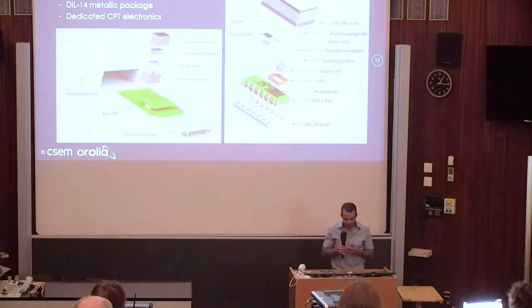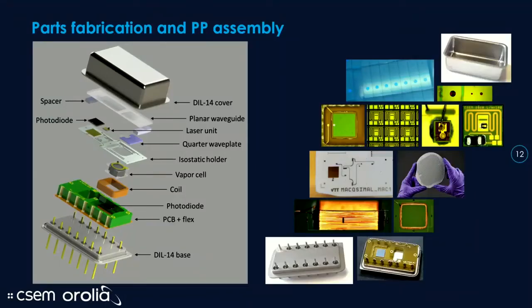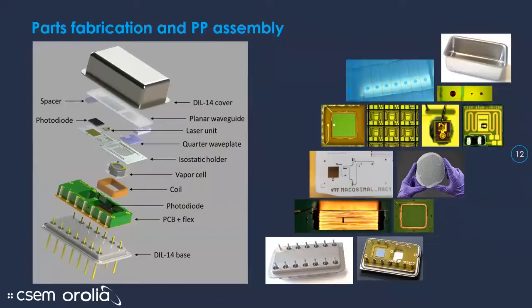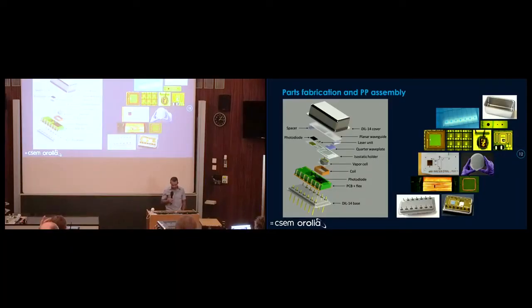The standard way of doing is you have the laser, then some space, optics, then the cell, and at the top, the photodiode. But this makes the physics package at least 15, 16 millimeters in height. With this approach, where we guide the light inside the waveguide, we could reduce the height of the physics package without the DIL to something lower than 5 millimeters. The overall, with the cover and so on, it's about 11 or 12 millimeters.